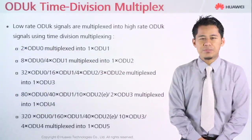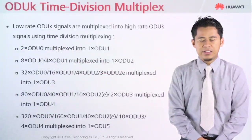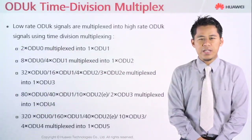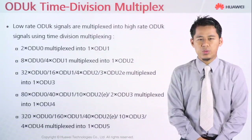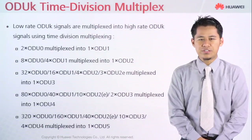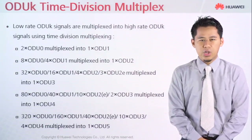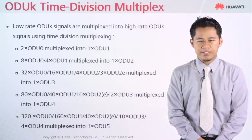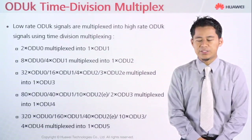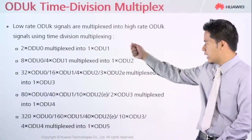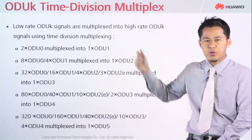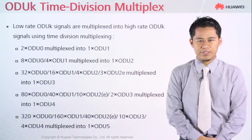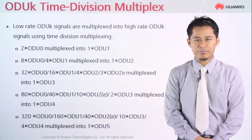ODUk time division multiplexing. This is where time division multiplexing will happen, which is from the low level, showing how they multiplex to become the higher level. As you can see, this is an example of how they multiplex to become the high order.